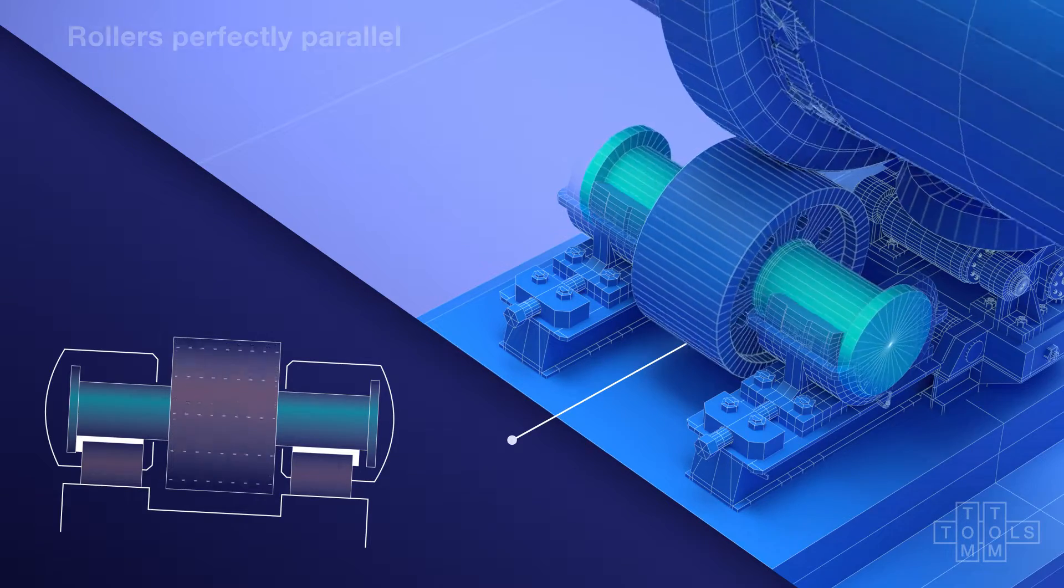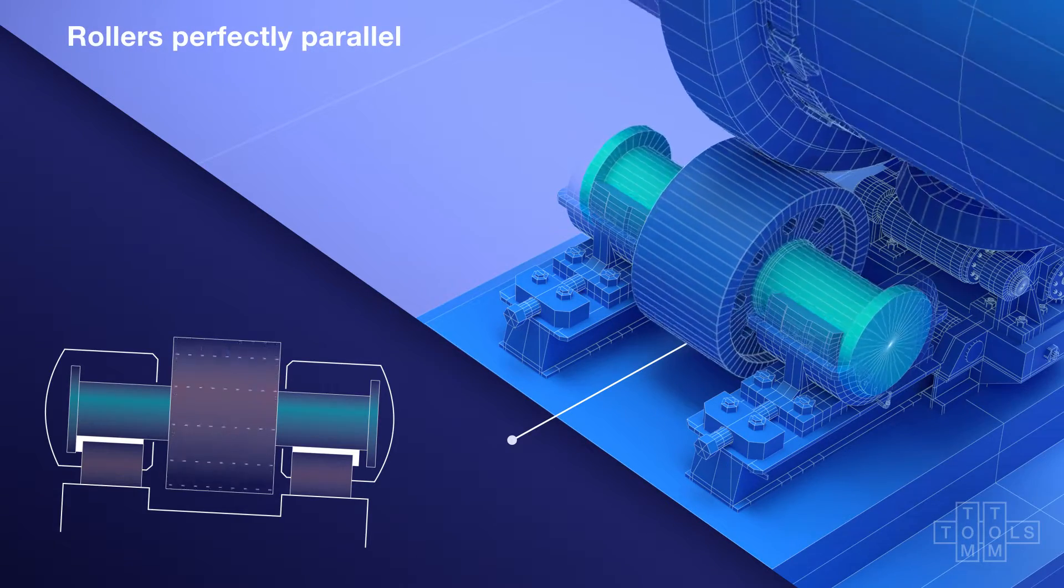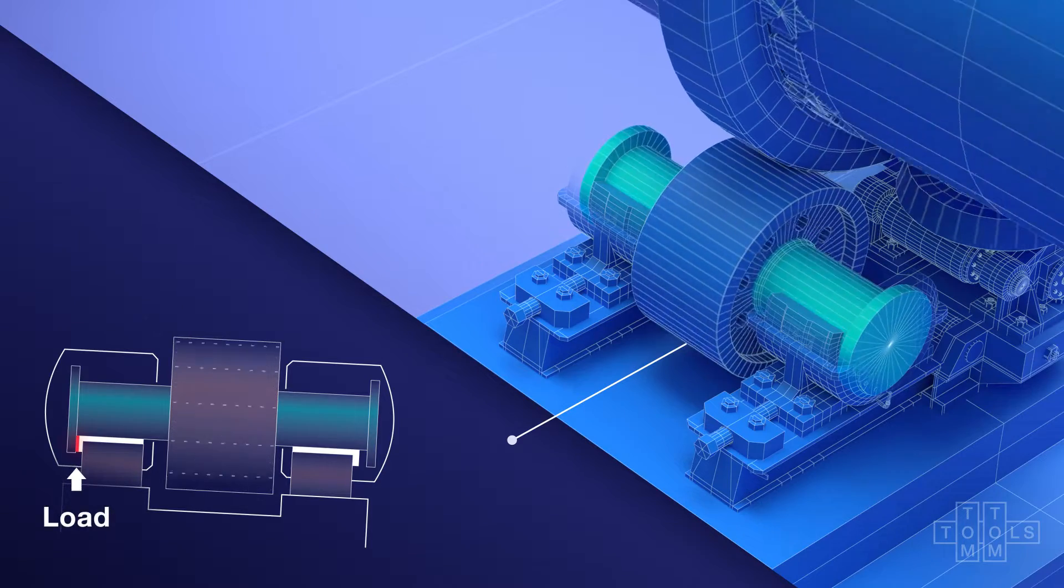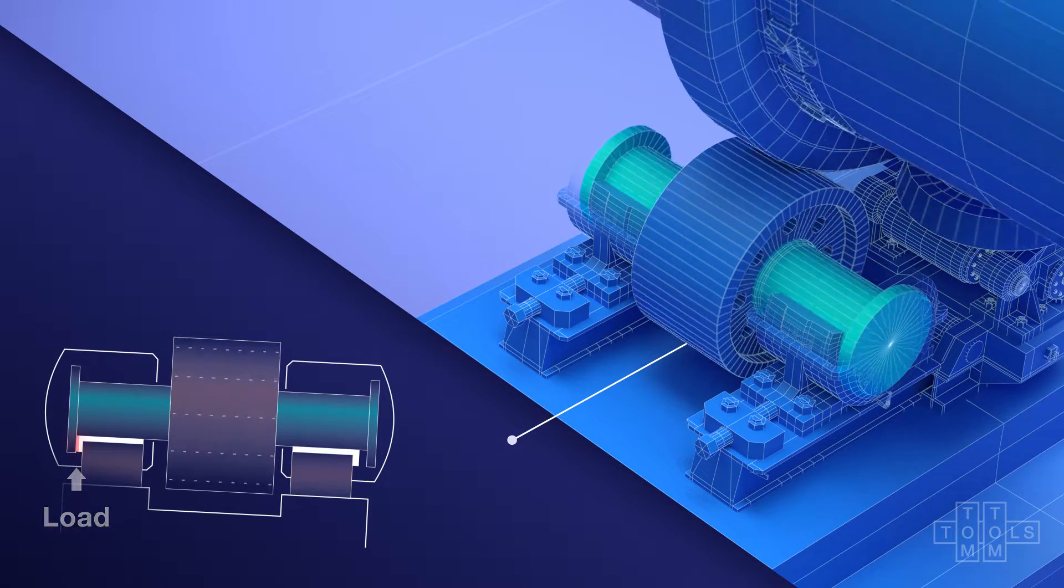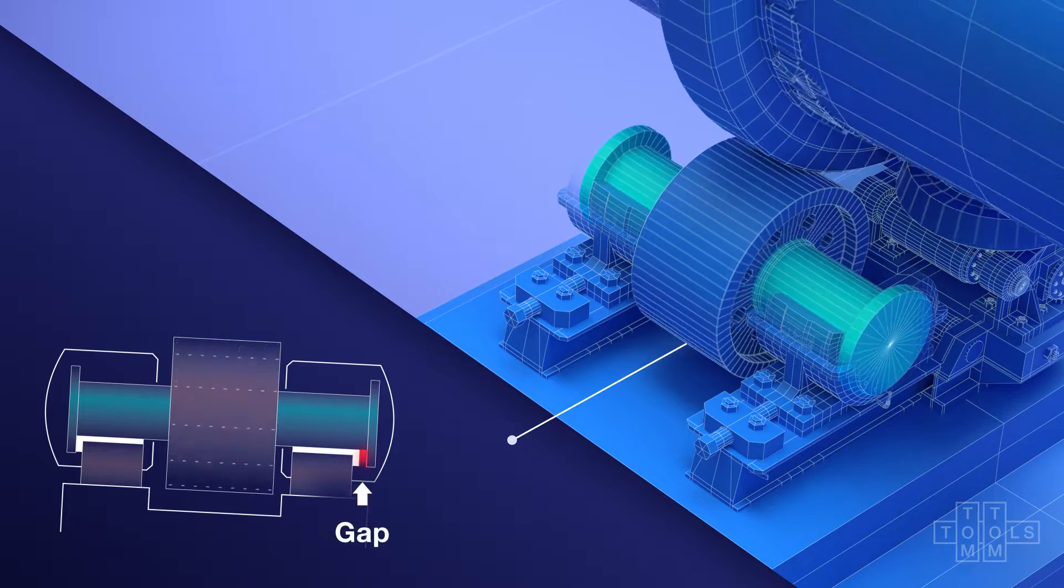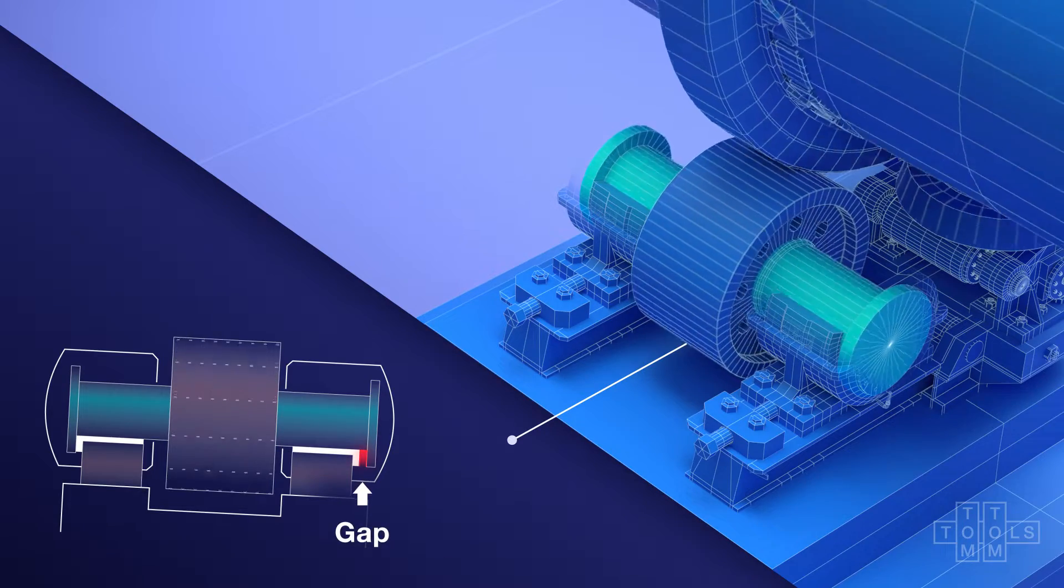When the rollers are perfectly parallel to the kiln axis, only slight load caused by the roller's weight and the slope is applied to the thrust collar. A gap is visible on the opposite bearing where no axial load is present.